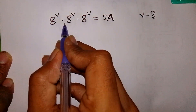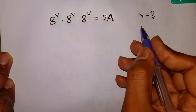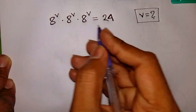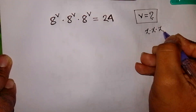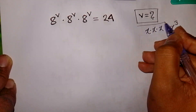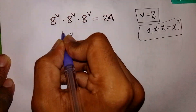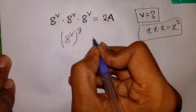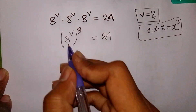8 power V times 8 power V times 8 power V is equal to 24. Find the value of V. First of all, we apply the form x times x times x is equal to x power 3, so here it will be (8 power V) bracket power 3, which is equal to 24.